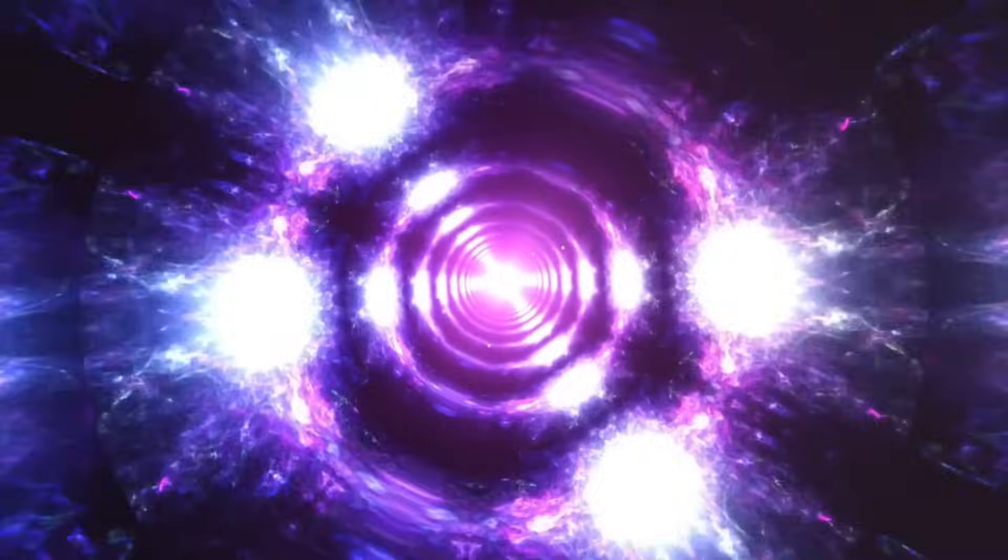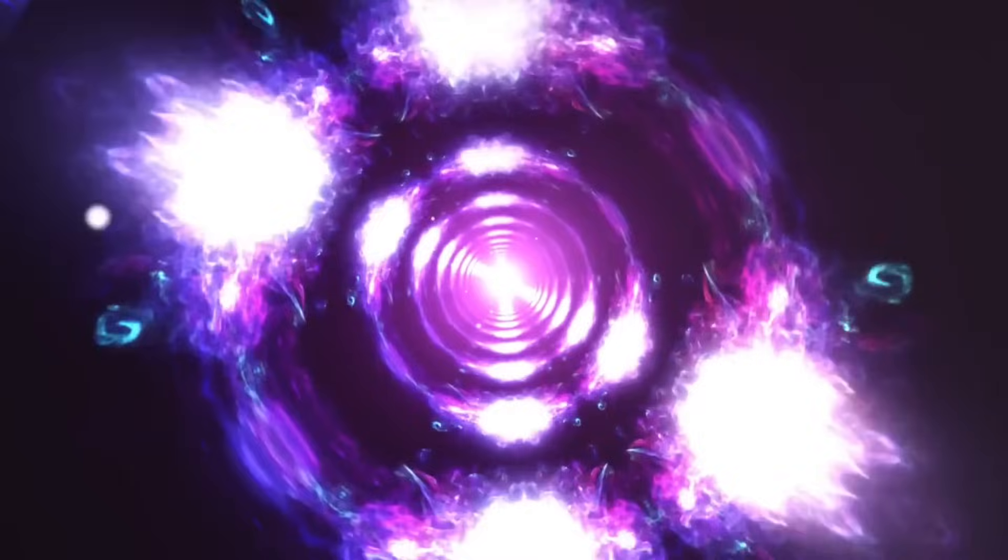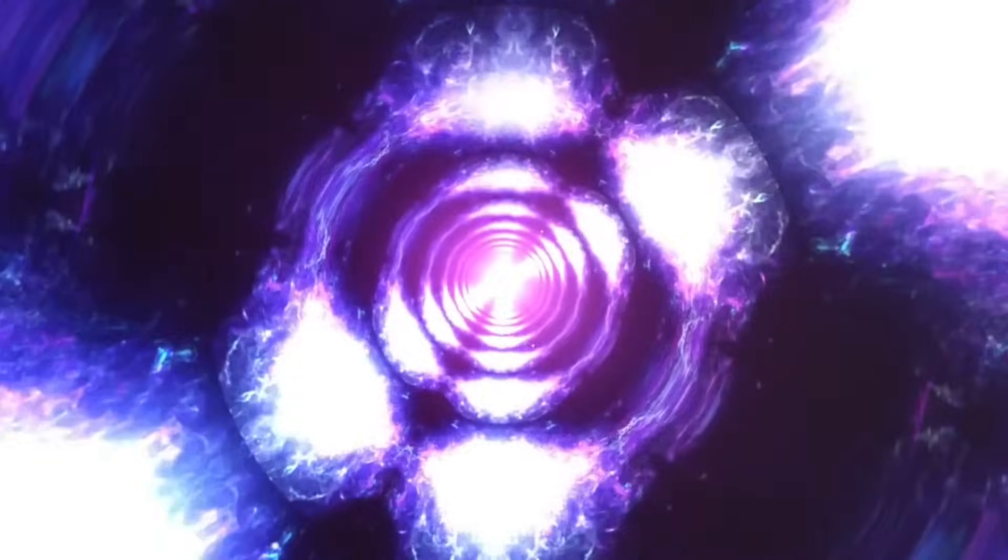As the first stars of the universe, Population 3 stars must have formed from the materials that were present immediately after the Big Bang. Therefore, they are thought to have consisted mainly of hydrogen, helium, and traces of lithium, since these are the primordial elements formed during the Big Bang's nucleosynthesis. Heavier elements such as carbon, nitrogen, oxygen, and iron were first produced by these early stars and released into the interstellar medium by supernova explosions.